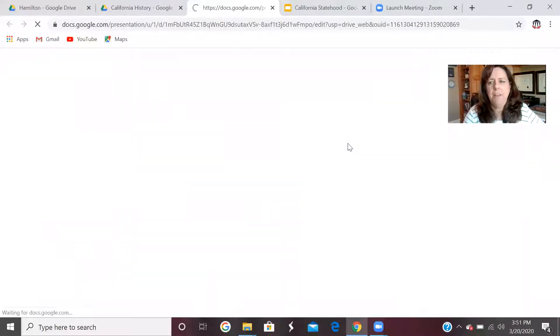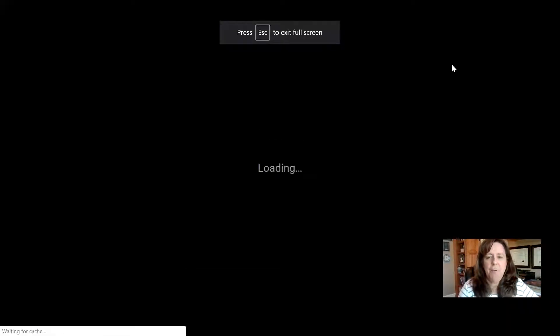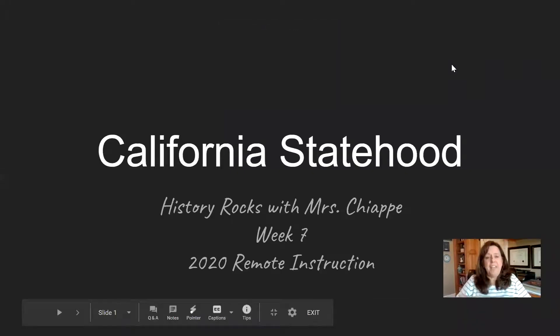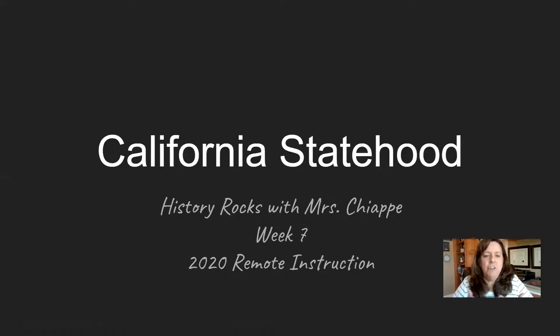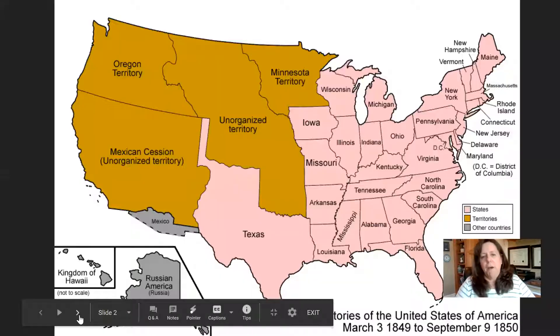That's not California History, but since you're looking at my office I might as well tell you what you're looking at. What I'm going to be doing is sharing my screen with you, so you will see what is on my screen — my computer screen, my PowerPoint, just like we were in class. Today's lesson, if you look in your syllabus and your history binder, is California statehood. It's our seventh week of instruction and our first week of remote learning.